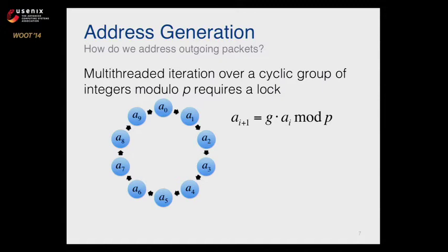First, address generation. The original ZMAP, in order to generate a random permutation of the IPv4 address space when scanning so that we didn't overload remote networks, used a cyclic group to iterate over the integers. We just pick a generator, multiply the current address by the generator, and it makes a nice loop. But there's a clear dependency between the current address and the next address. When you parallelize this with multiple send threads using the same state, you need to take a lock on the critical section, update the address, then unlock — creating a bottleneck.